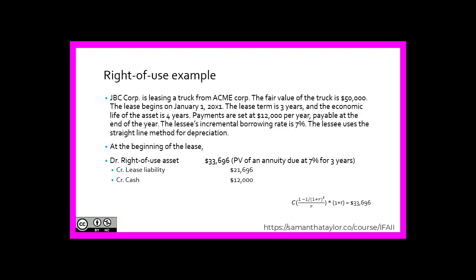At the beginning of the lease, the lessee recognizes the right-of-use asset and lease liability at the present value of the minimum lease payments. Step one: debit the right-of-use asset in the amount of $33,696, with the first cash payment applied and the remainder credited to the lease liability.